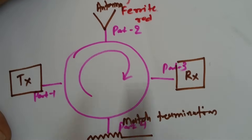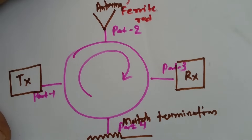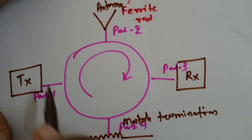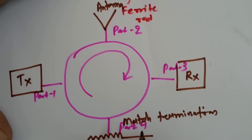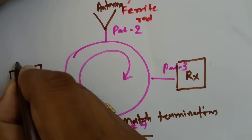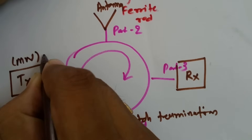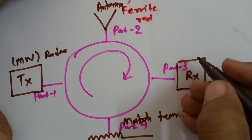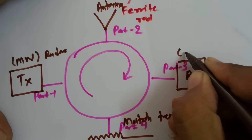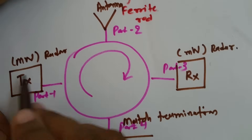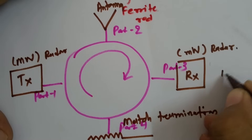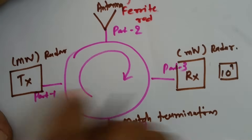The duplexer's aim is to provide transmitting and receiving circuits using a single antenna. The major problem when using a single antenna for both transmitting and receiving is isolation. The transmitting circuit functions at megawatts in radar, while the receiving circuit functions at milliwatts, giving a power level difference of up to ten to the power of nine times between the transmitting and receiving circuits.